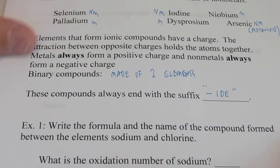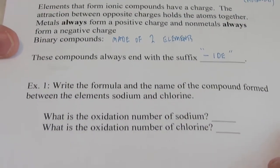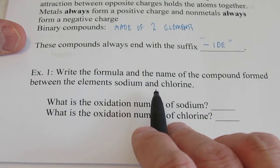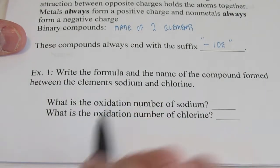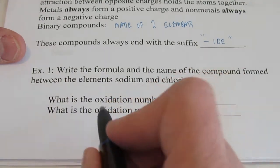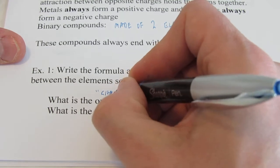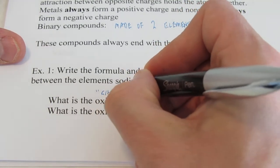They will always end in -ide. So let's start with a couple of simple examples. If we had the compound between sodium and chlorine. Well, first of all, what's the oxidation number or charge of the sodium ion?